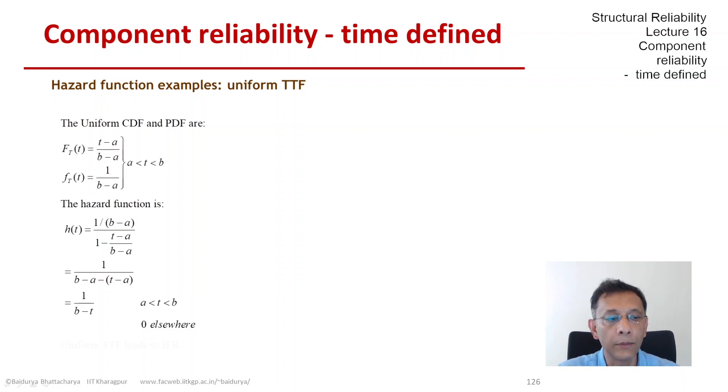So here we have a very good example of a random variable that's defined on a finite range only, both on the left and the right. But still, we have a reliability function which starts from 1,